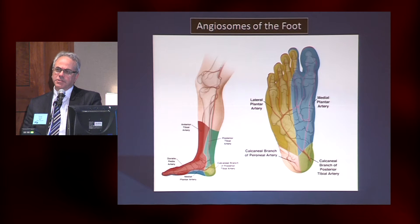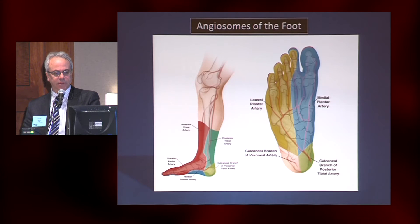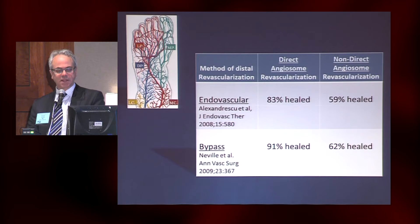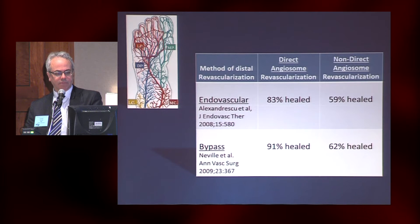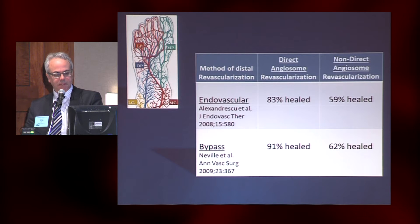We've seen the angiosome before. In the normal foot, certain parts are perfused primarily by certain vessels, but there's a dense collateral network available. So it's not always essential that we have targeted revascularization, but a couple of studies do show that angiosome-directed revascularization versus non-directed changes your outcomes with significant differences.